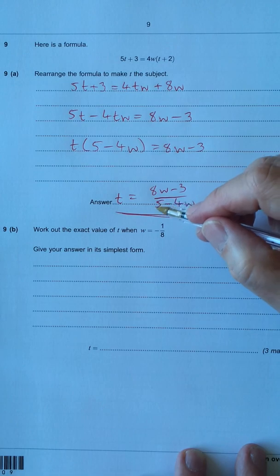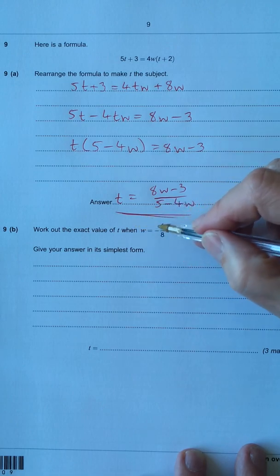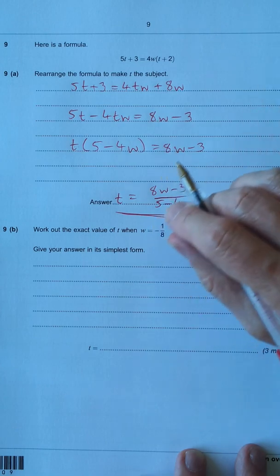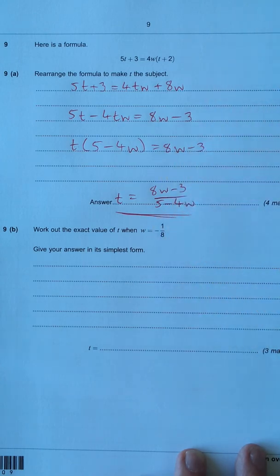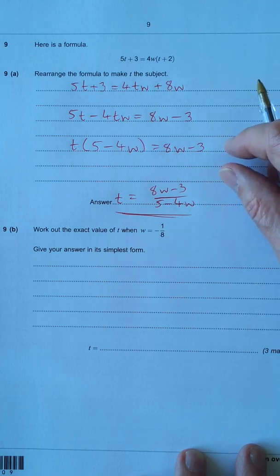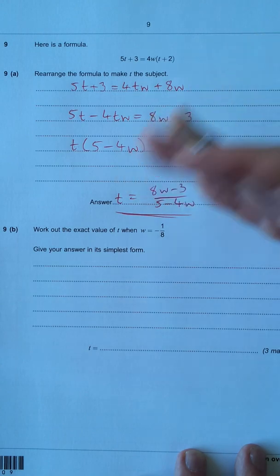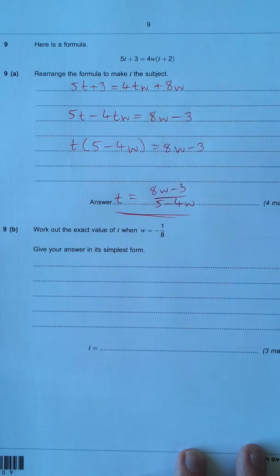OK, part b, work out the exact value of t when w is negative 1 eighth. So let's put the values in. I think it's easier if you try and work out as much as you can without the calculator. If not, if possible, work the whole lot out. Very often they work out fine. But try to do as much as you can without the calculator because you tend to make mistakes with brackets and negatives.